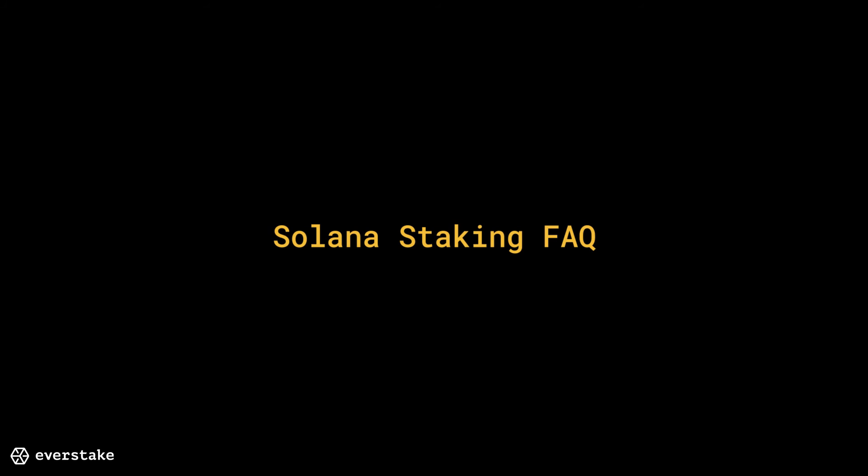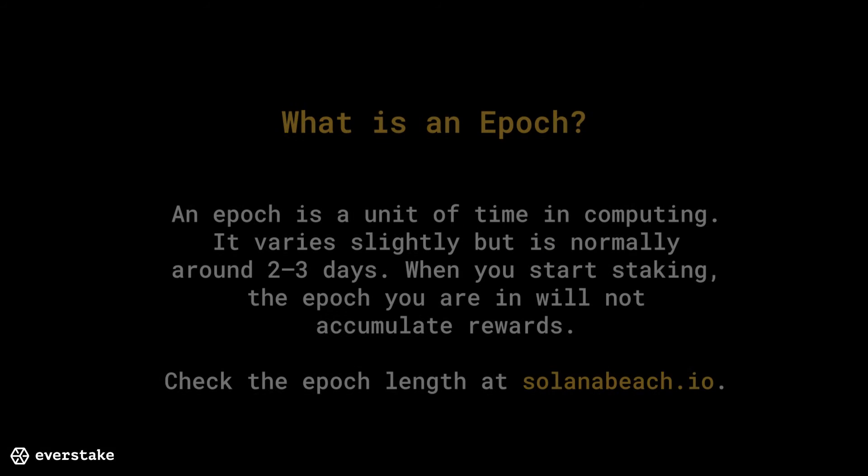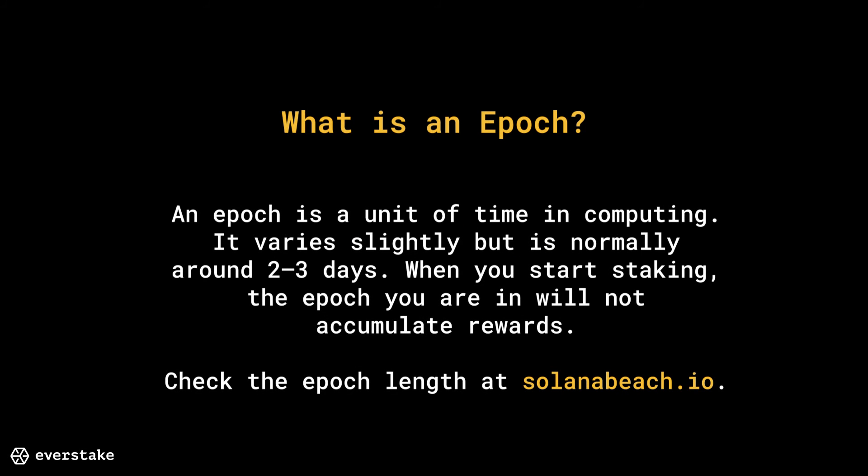Solana Staking FAQ: What is an epoch? An epoch is a unit of time in computing. It varies slightly, but is normally around 2–3 days. When you start staking, the epoch you are currently in will not accumulate rewards. Check the epoch length at solanabeach.io.